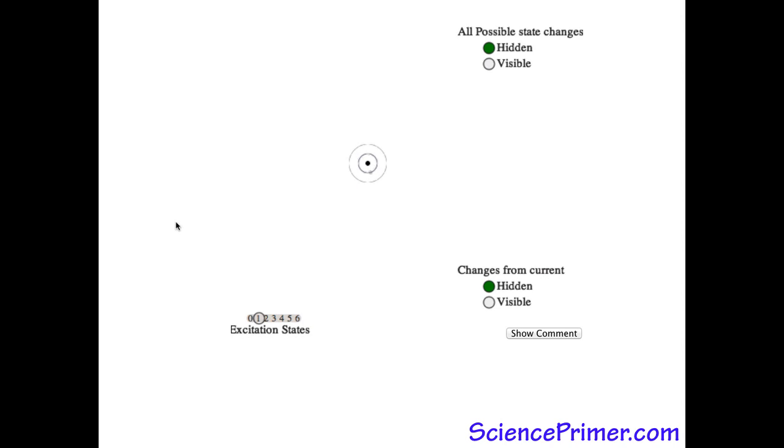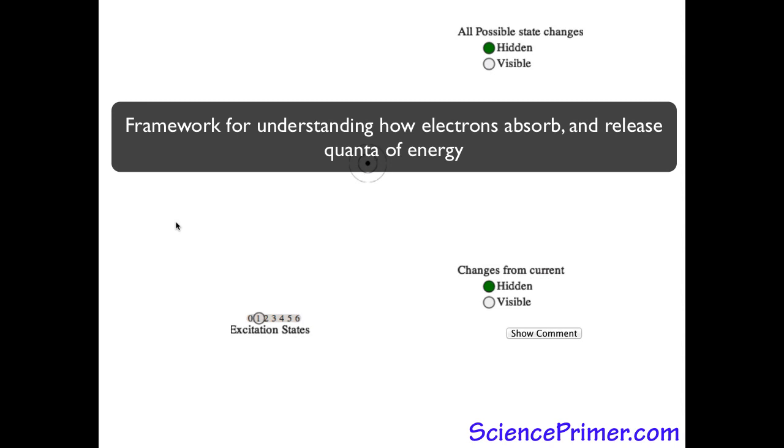Exploration of the Bohr model of the atom contributed to the development of the framework for understanding how electrons absorb and release discrete amounts or quanta of energy by suggesting that electrons associated with an atom do not have free range to be anywhere around the atom. Rather, electrons maintain discrete positions around the nucleus.